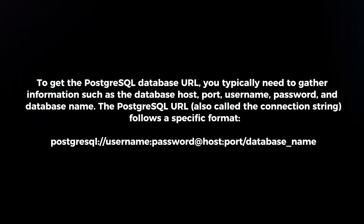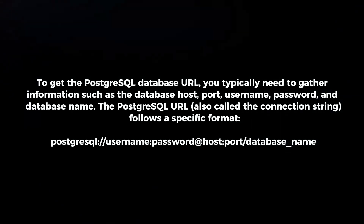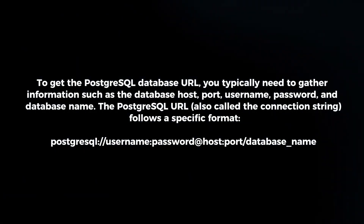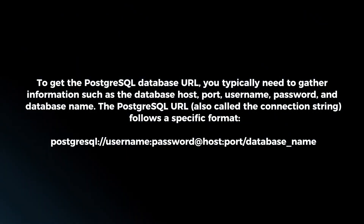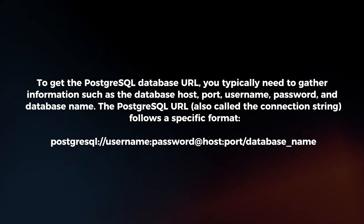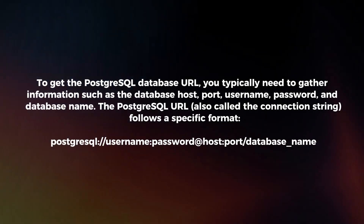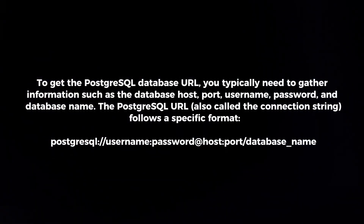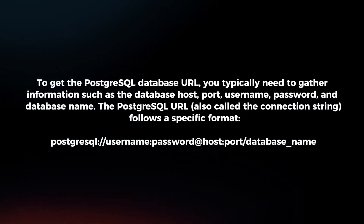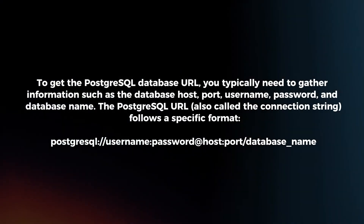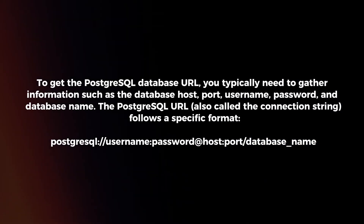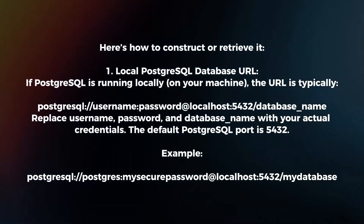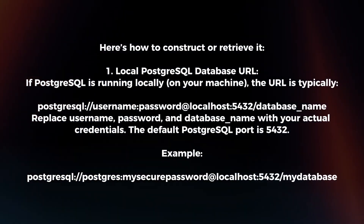To get the PostgreSQL database URL, you typically need to gather information such as the database host, port, username, password, and database name. The PostgreSQL URL follows a specific format. Here's how to construct or retrieve it.